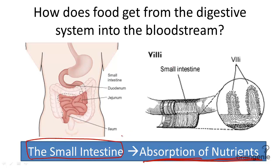The organ that's primarily in charge of absorbing nutrients into the bloodstream is the small intestine. Let's explore the structure of the small intestine and then talk a little bit about how it functions.